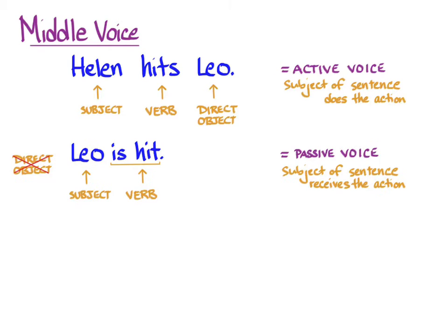When we turn it around: Leo is hit. Leo is now the grammatical subject, the verb is both words 'is hit,' and there is no direct object, since in the passive voice the grammatical subject receives the action of the verb — that's the job of a direct object in an active sentence. You can also specify who does the action in a passive sentence; in English we say 'Leo is hit by Helen,' and in Greek we use the genitive or dative of agent.